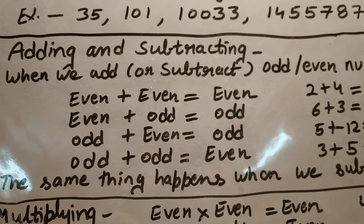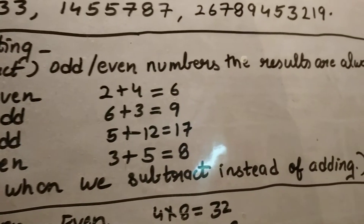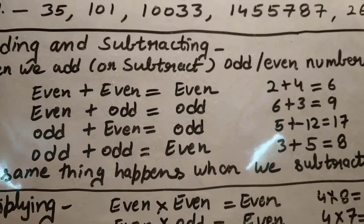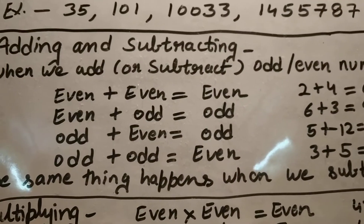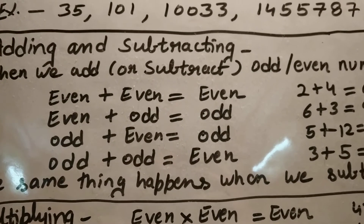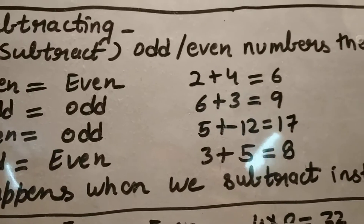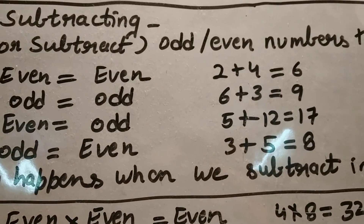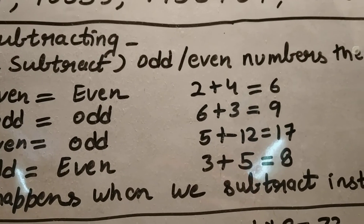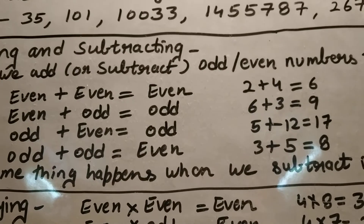Now let's look at a few rules for adding and subtracting even or odd numbers. Even plus even always gives an even answer. For example, two plus four — both are even numbers — gives six, which is also an even number. Even plus odd always gives an odd answer.